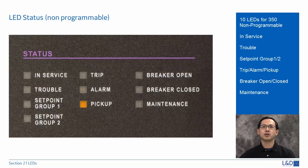Pickup LED will turn on to orange color upon a pickup condition generated by any of the relay features. The indicator will turn off if no pickup condition is detected.